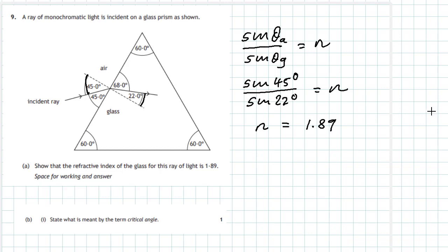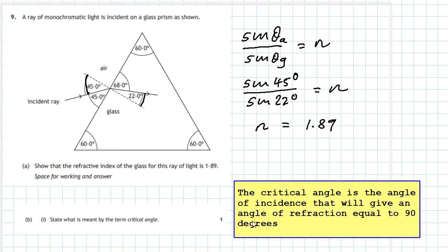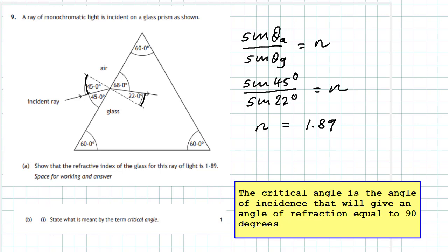Remember, no units for the refractive index — it has no units at all. So that's the first part done. Now part B says: state what is meant by the term critical angle. When you see a 'state' question, just give a sentence noted by heart.